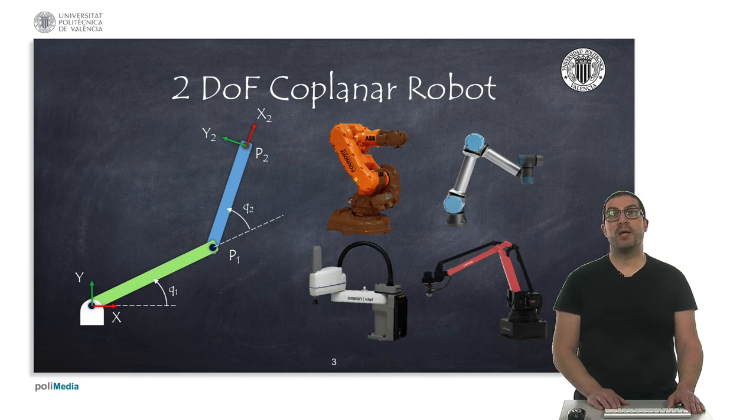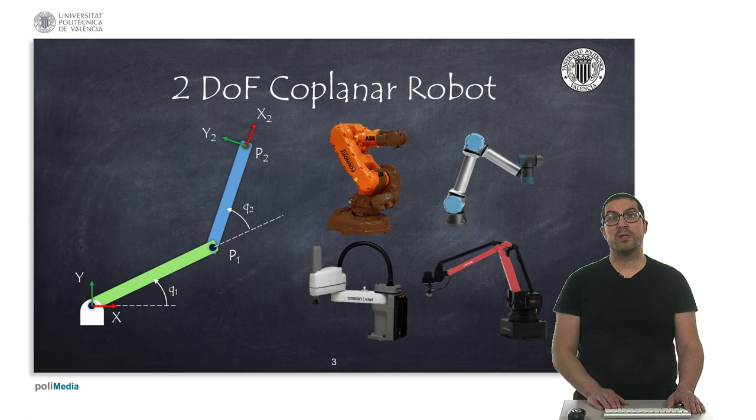For example, it appears in links 2 and 3 of a serial manipulator, also in a collaborative robot and also in a parallelogram robot arm. In addition to this, a SCARA robot also has a coplanar structure in its links 1 and 2.